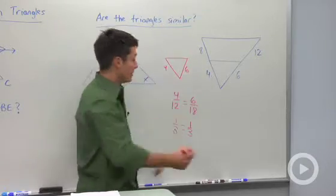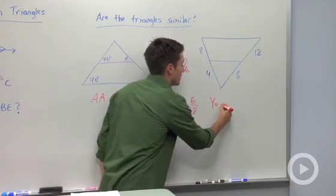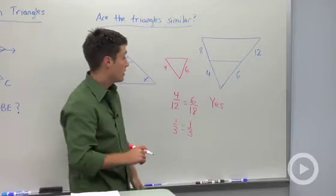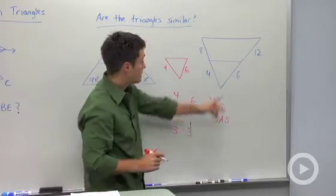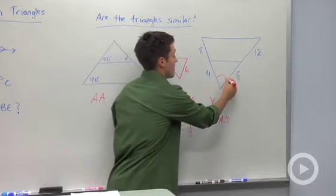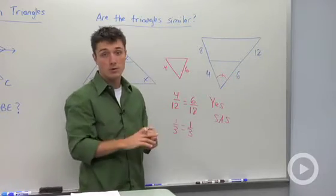So are these triangles similar? And the answer is yes. And our shortcut here would be the side-angle-side shortcut, because they both share this same angle right there, so it has to be congruent to itself.